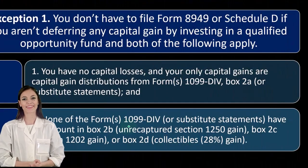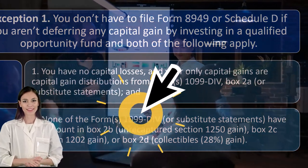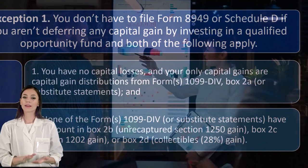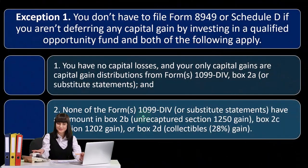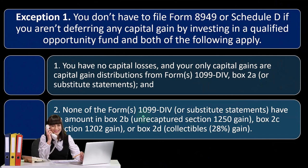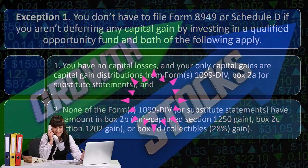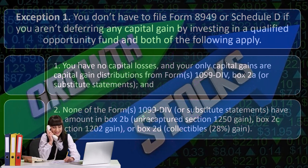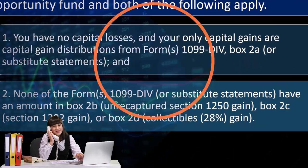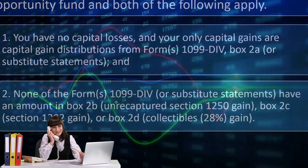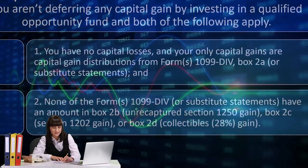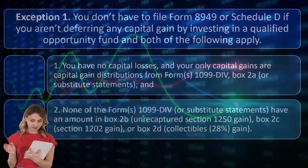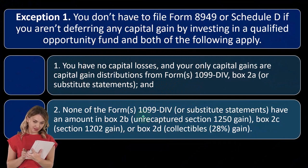Sometimes when you have a distribution from the company — when the board of directors decides to give out money to shareholders — it might dip into not just the retained earnings but also into the original investment from the original stocks. In that case, they might have to classify it not as a dividend but rather as a capital gain. And instead of giving a 1099-B, since you didn't facilitate the transaction — they decided to give a distribution — it will be reported on the 1099-DIV generally.